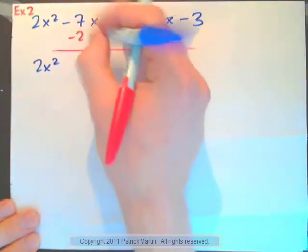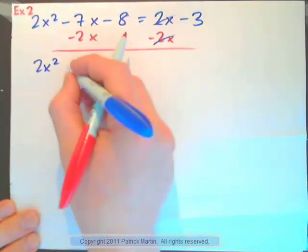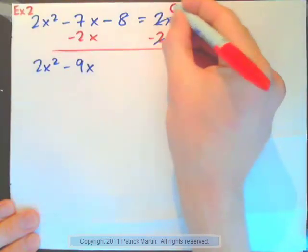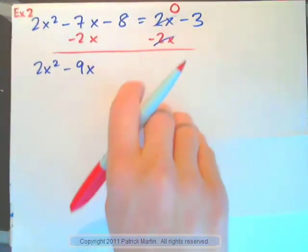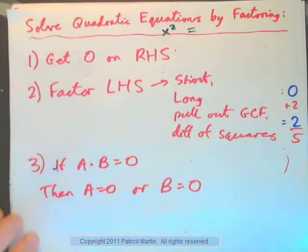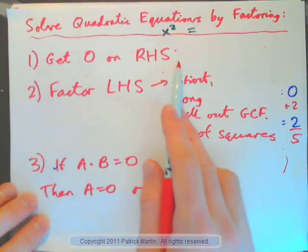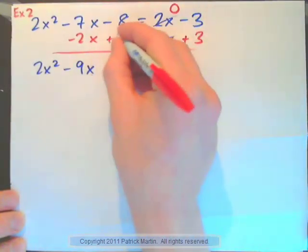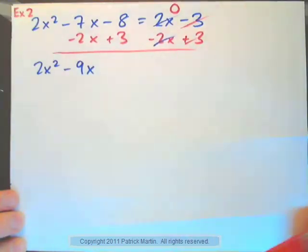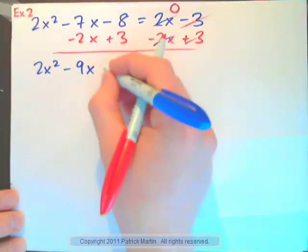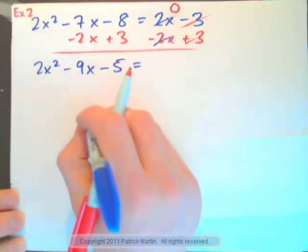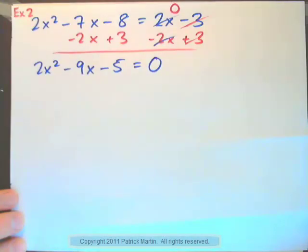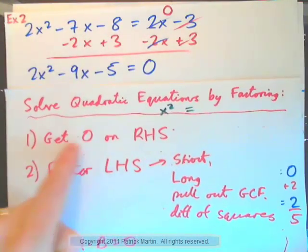These are x terms. So, we add it to the x's. Negative 7x minus 2x minus 9x, isn't it? And at the same time, because I'm trying to get zero on the right-hand side. That's the first step. Remember, the steps for solving quadratic equations. First step is to get zero on the right. So, I'll add 3 to both sides, right? Negative 3 plus 3 is zero. So, negative 8 and 3 is negative 5. And on the right-hand side, I have zero.